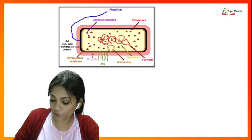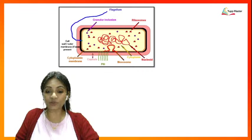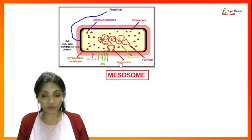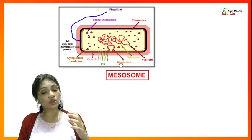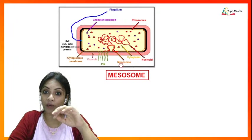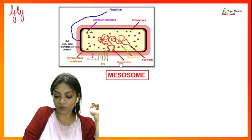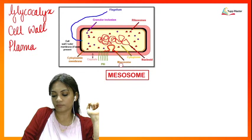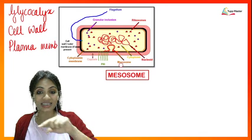Looking at the prokaryotic cell, there is an infold in the plasma membrane layer called an invagination, and this invagination is called a mesosome. It is believed that the mesosome is the layer which is giving rise to the cell wall, which is part of the cell envelope (glycocalyx, cell wall, plasma membrane).